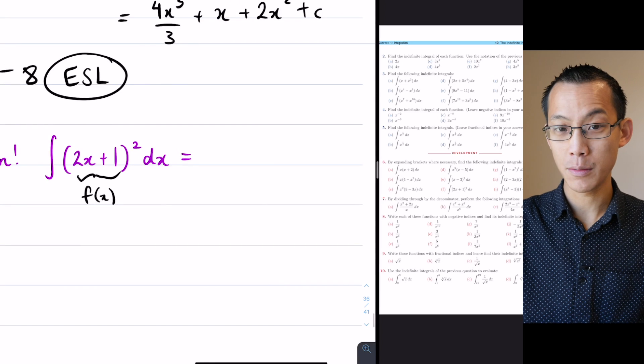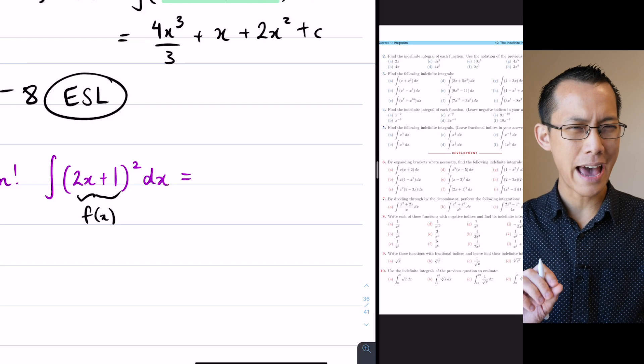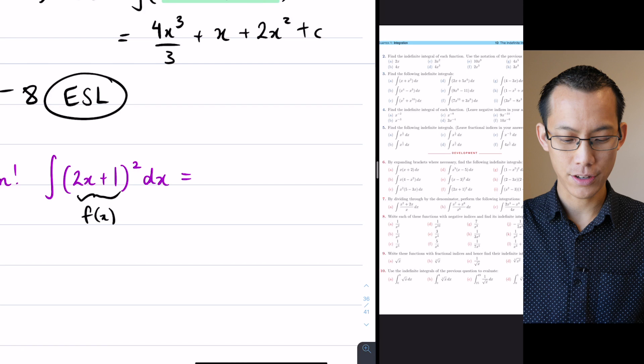What we're going to do is very similar to how we did it before. I'm going to increase the index, divide by that new index, and we just add one more step in because of that reverse chain rule.